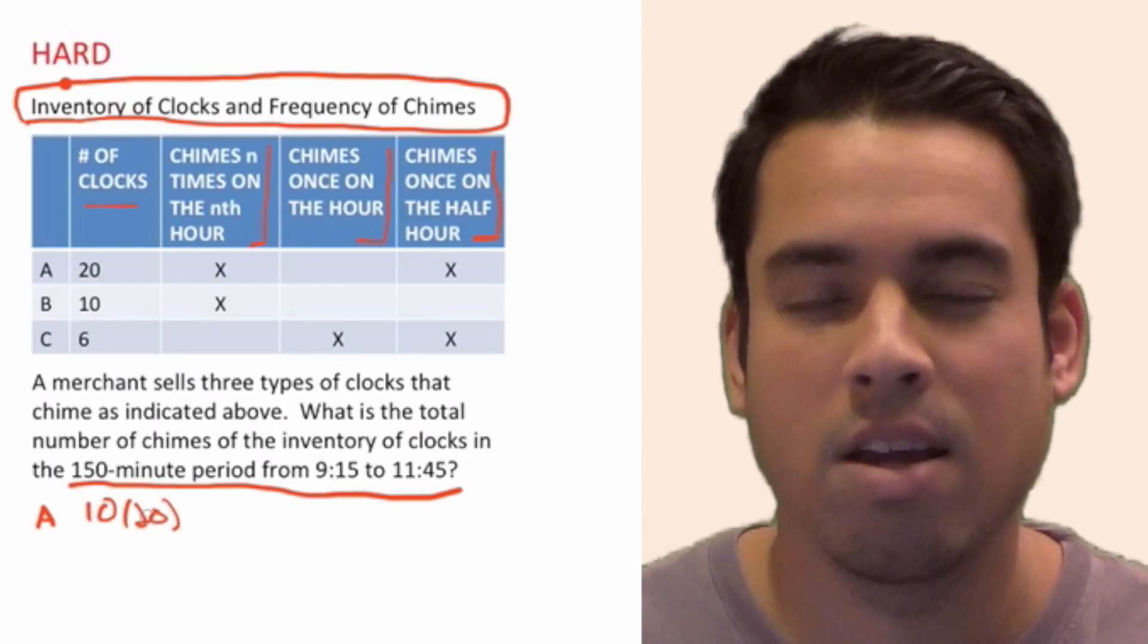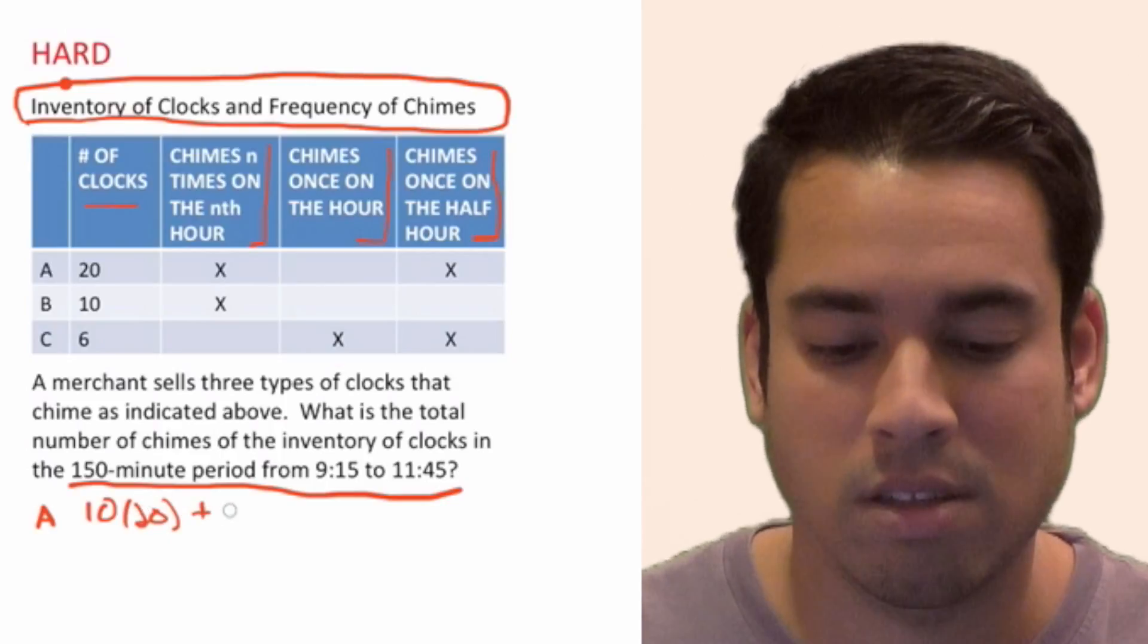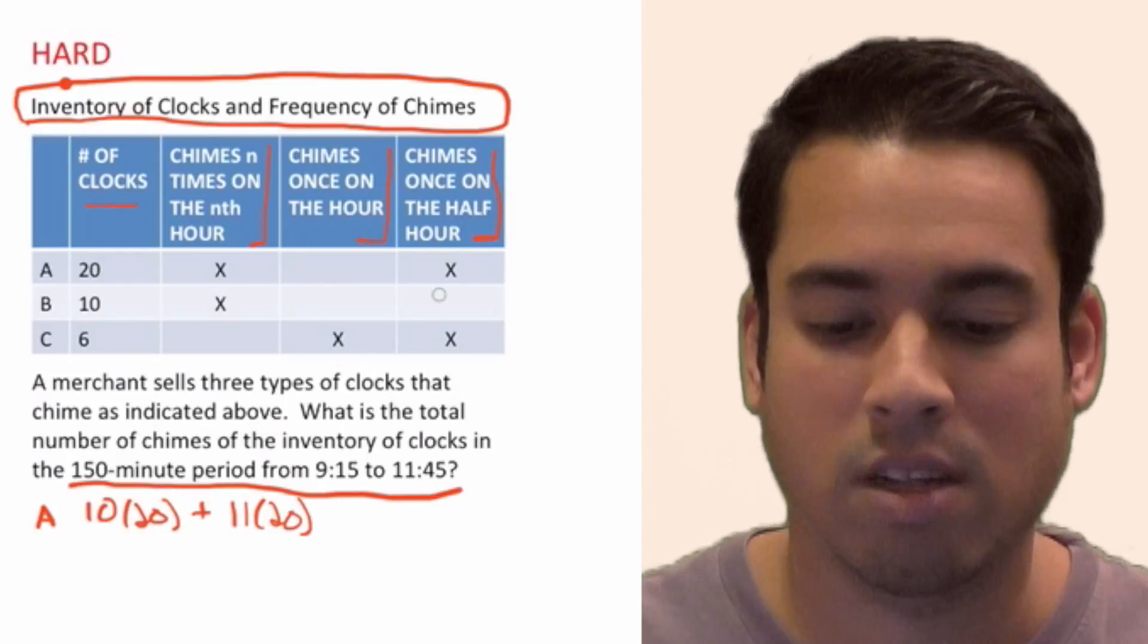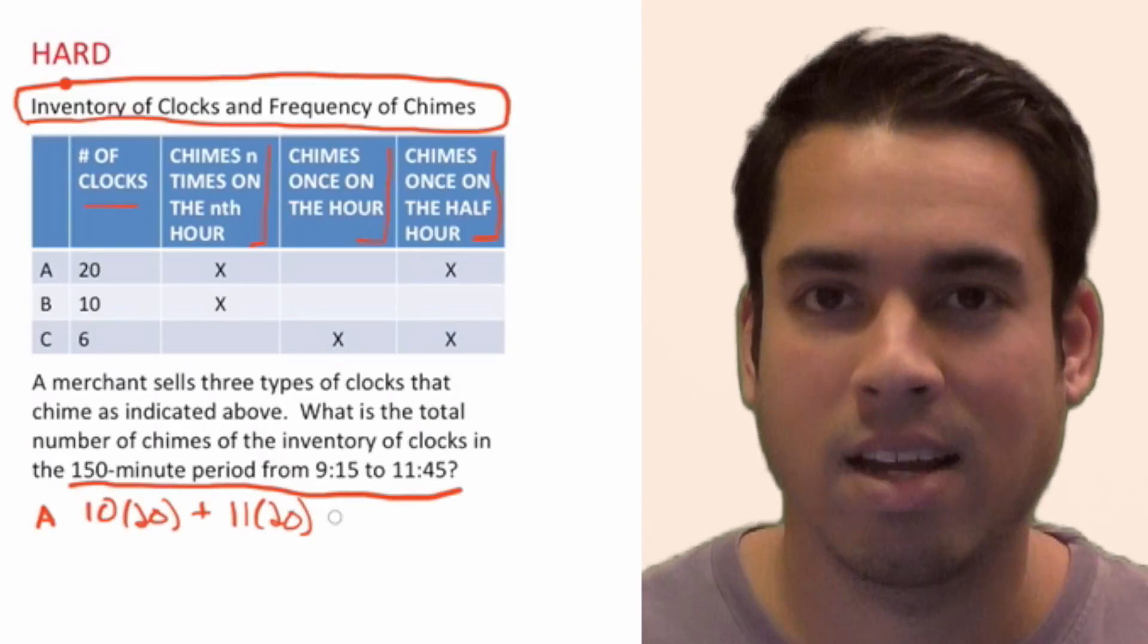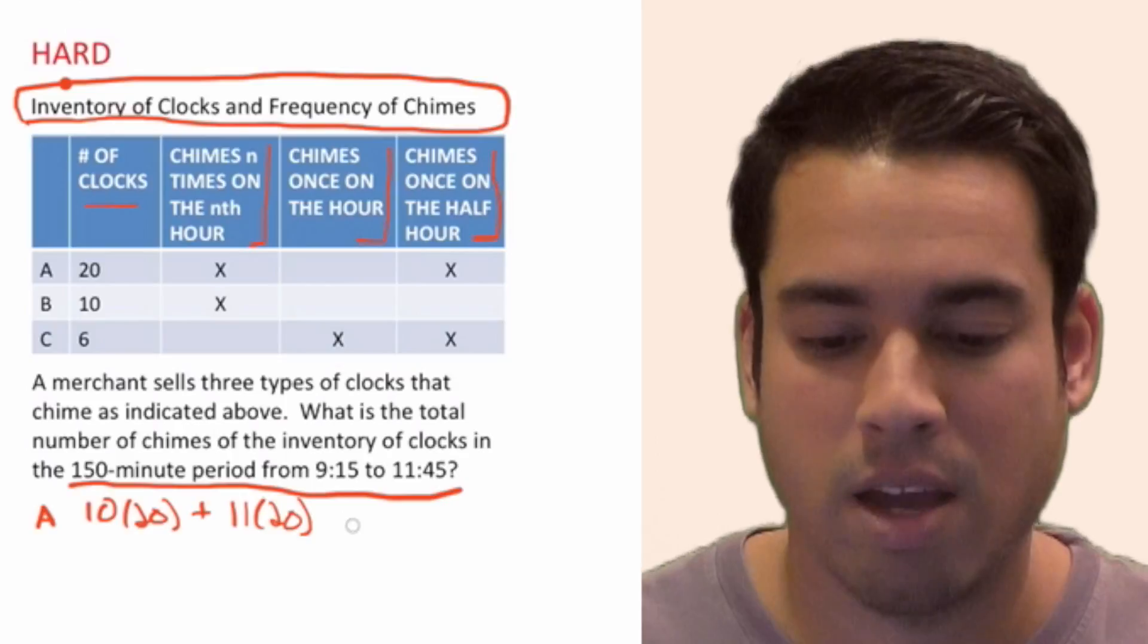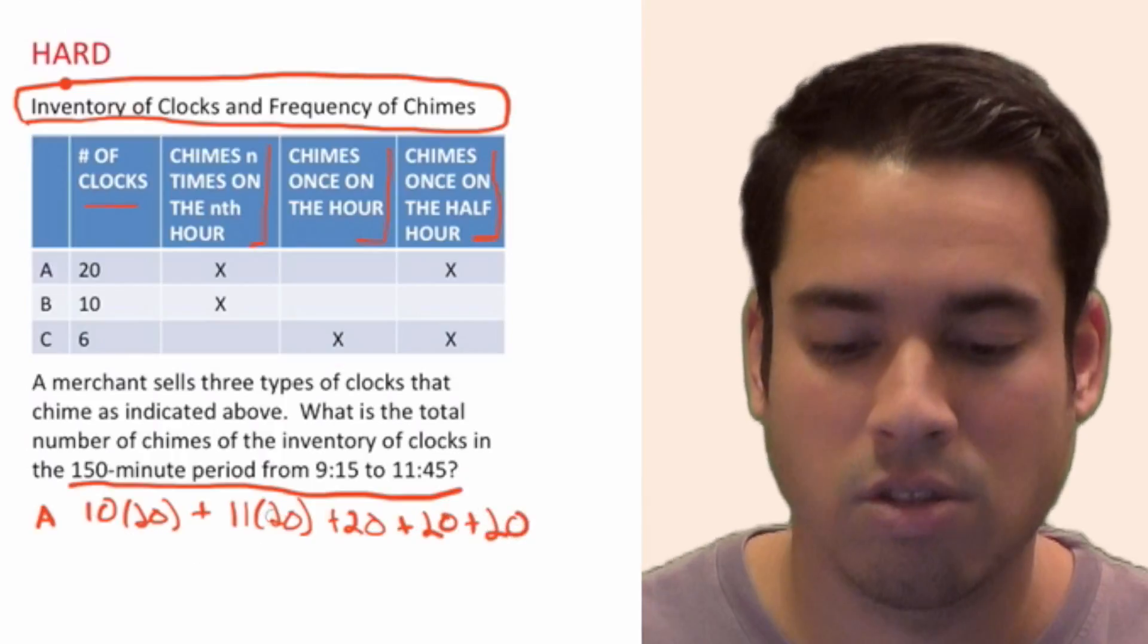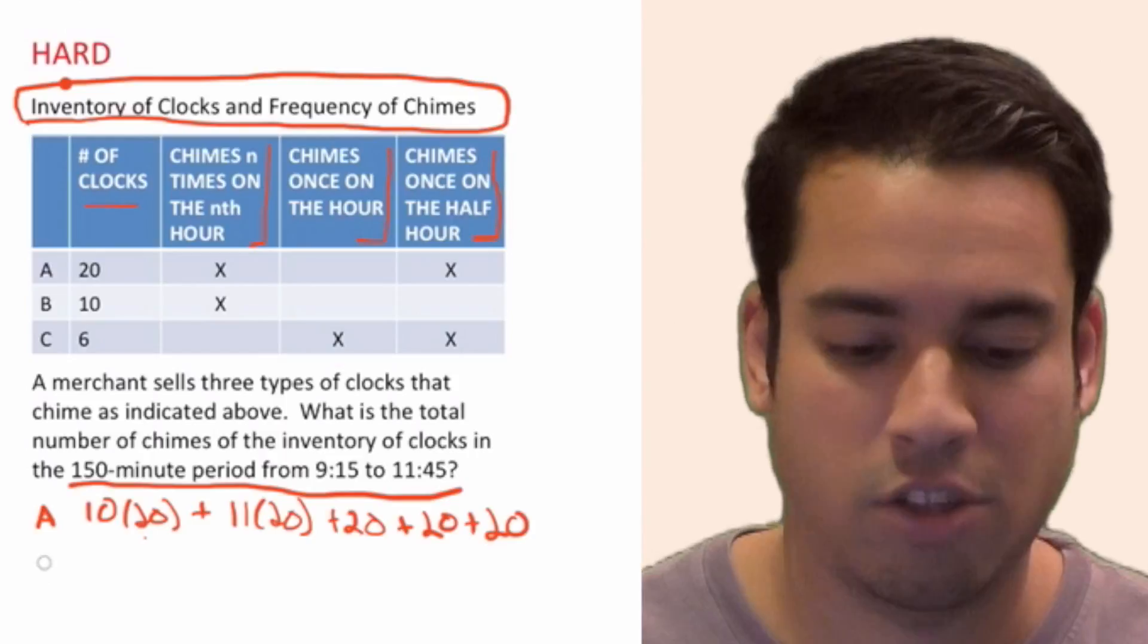And then what about 11 o'clock? At 11 o'clock, it's going to chime 11 times. So now we've got this plus those 11 chimes, again, times 20, the number of clocks. So we've got 10 and 11. And now what about this rule where it chimes once on the half hour? How many half hours are we going to have between 9:15 and 11:45? We're going to have 9:30, 10:30, and 11:30. So now we have 20 clocks at 9:30, plus 10:30, plus 11:30. So this is all the chimes for A.